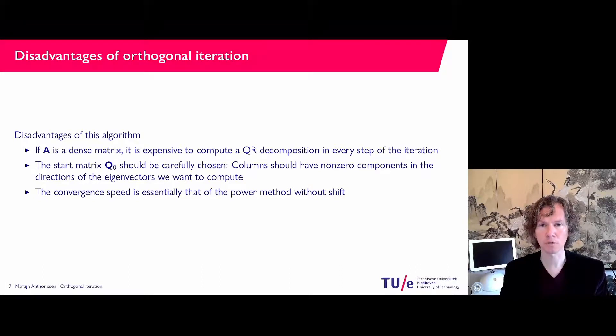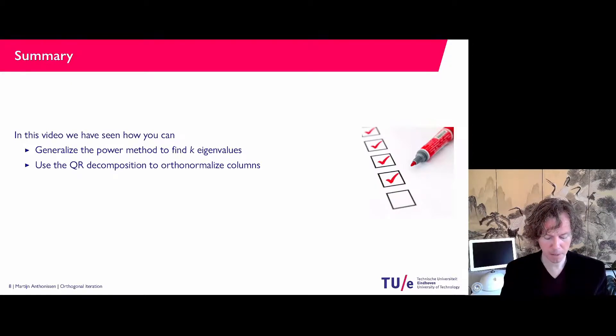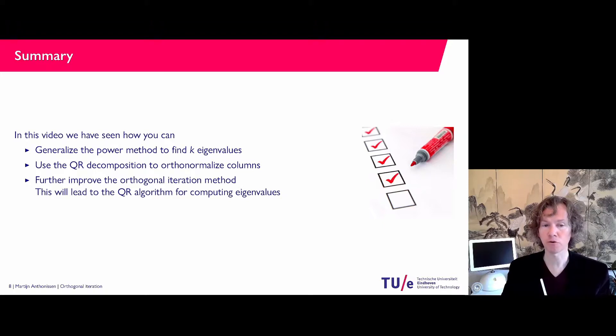And that will lead to the QR algorithm which is the topic of the next video. So what we have seen is that we can generalize power methods to find k of the eigenvalues of a matrix. And as an ingredient to that method, orthogonal iteration, we can use the QR decomposition to make sure that we keep k separate directions in there. And we can further improve this and the further improvement will be the QR algorithm for computing eigenvalues. So that will be the topic of the next video. I hope all was clear and I look forward to seeing you again in the next video in this series.